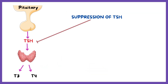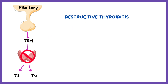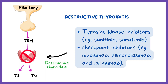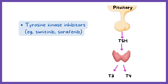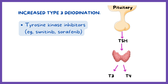Next is suppression of TSH, which can be caused by dopamine. Destructive thyroiditis is a side effect of medicines including tyrosine kinase inhibitors (for example, sunitinib, sorafenib) and checkpoint inhibitors (for example, nivolumab, pembrolizumab, and ipilimumab). Tyrosine kinase inhibitors like sorafenib can also result in increased type 3 deiodination.